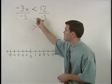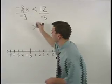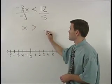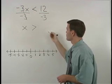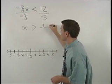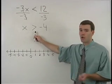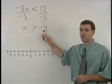On the left side, the negative 3s cancel and we're left with x. And on the right side, 12 divided by negative 3 is negative 4. So we have x is greater than negative 4.